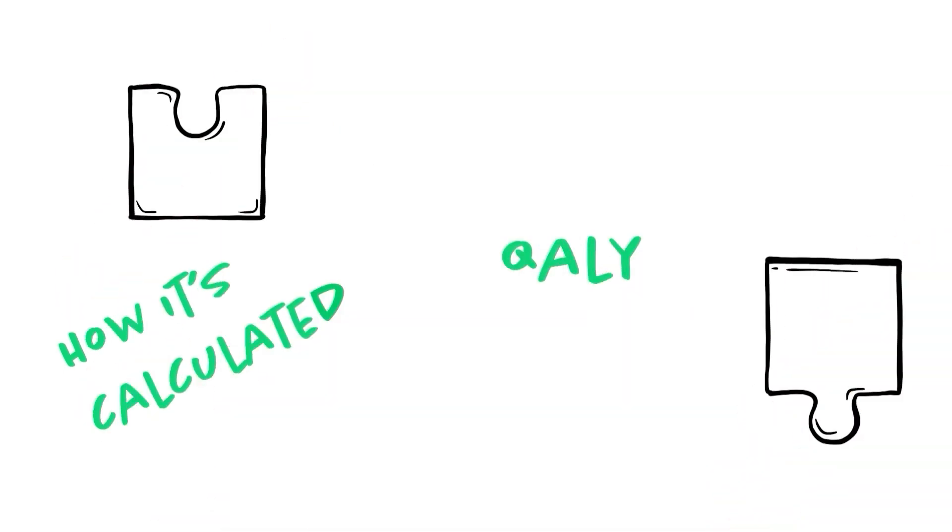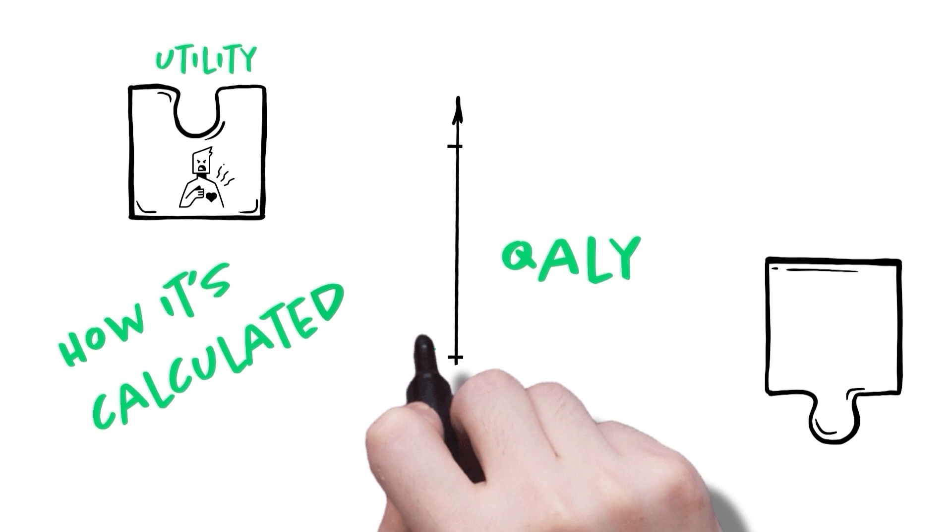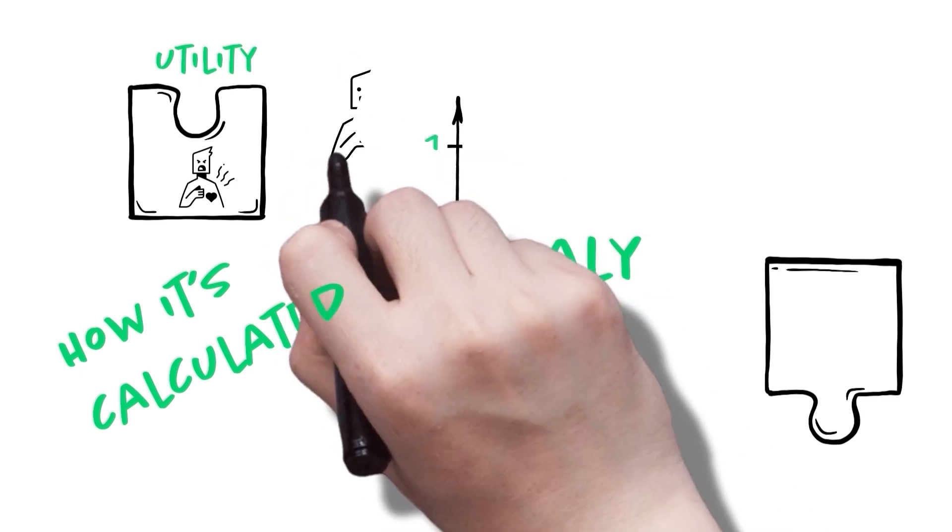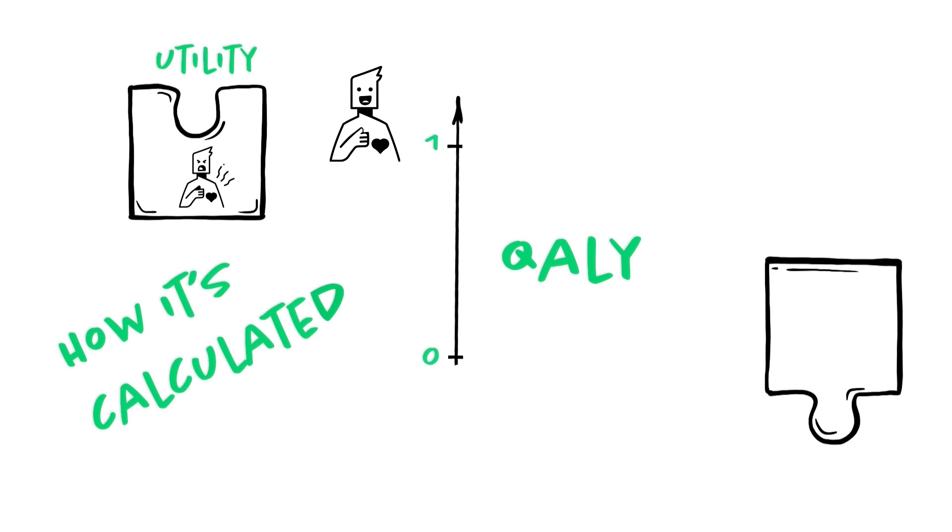Now, let's continue with how we calculate QALYs. Calculating a QALY requires two inputs. The first input is what we call the utility values, or the utility weights that are associated with all the health states you are interested in. The valuations fall between 0 and 1, with 1 representing the valuation of a state of perfect health and 0 representing the valuation of death.